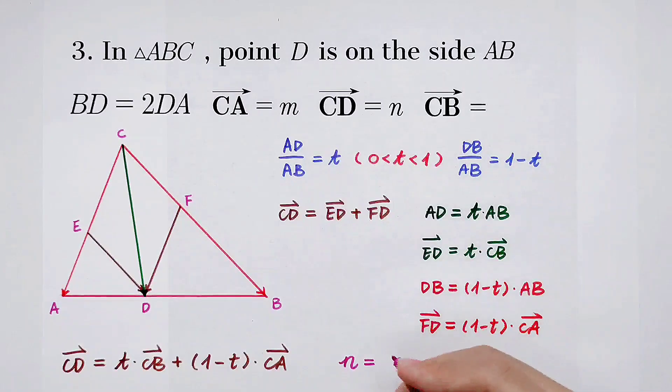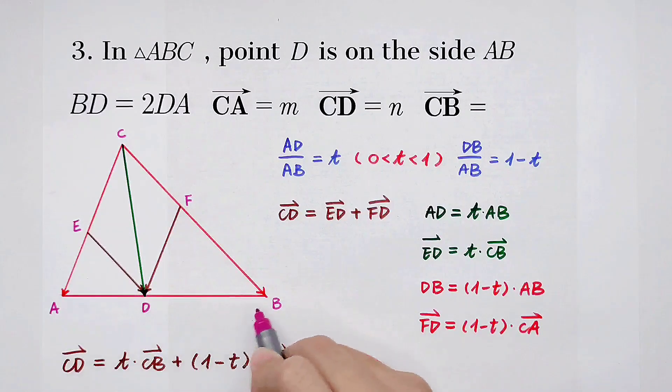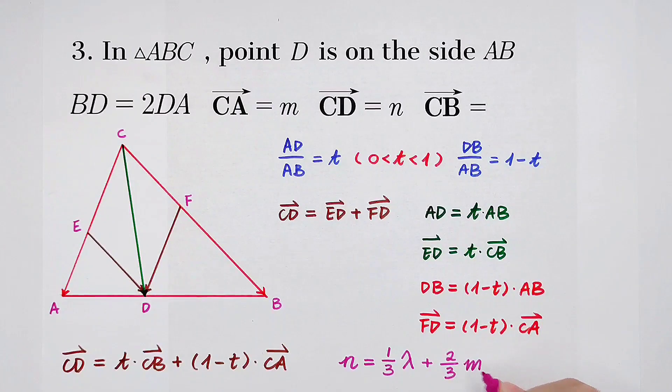And we suppose it is lambda. So it's T times lambda. T in our problem is, because BD is 2 times of DA, so our T is 1 third. 1 third, then times lambda, and then plus 1 minus 1 third is 2 third, and then times the vector CA is M.